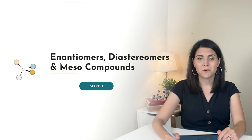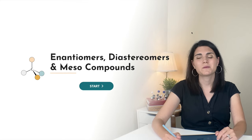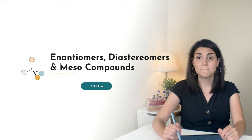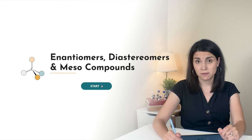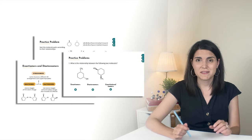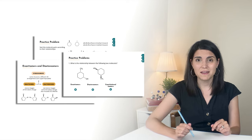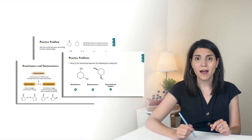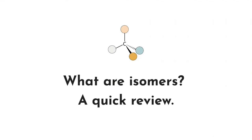In this organic chemistry tutorial, we're going to talk about enantiomers, diastereomers, and meso compounds. If you want to follow along with the slides and the practice problems that I'm using today, make sure you click the link in the box below. And while you're at the website, make sure you check out all the other organic chemistry resources on there. Let's get started.